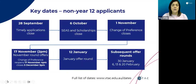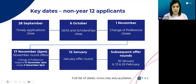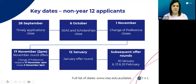For non-Year 12 applicants, the application process is already open and we also have that guaranteed review date of the 15th of September. The change of preference for non-Year 12 applicants closes on the 1st of November, because we are not awaiting Year 12 results. Offers for non-Year 12 applicants are made on the 17th of November at 2pm. That change of preference period reopens on the 17th of November and closes again on the 5th of December. Subsequent offer rounds for non-Year 12 applicants are the same as current Year 12 students.